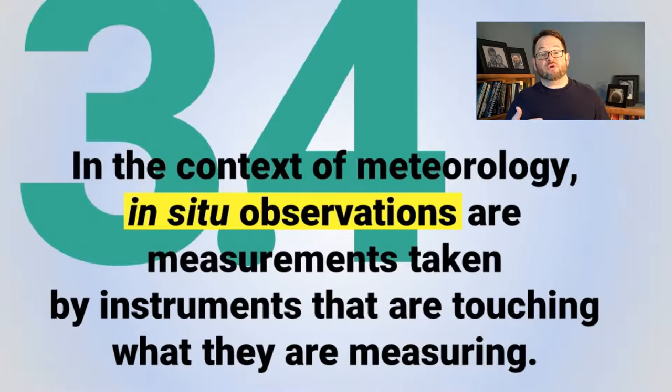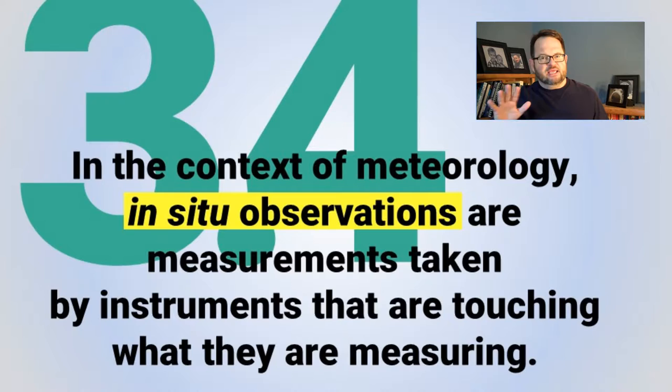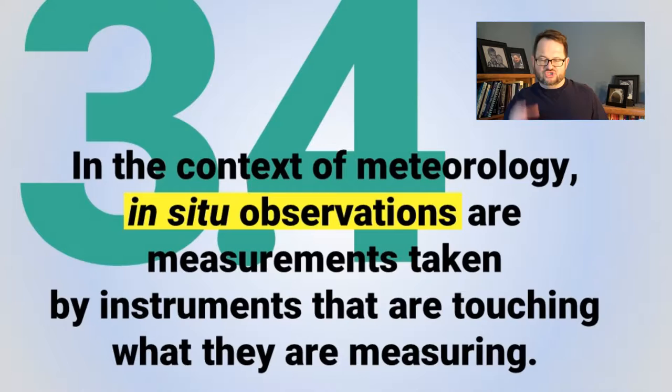That's in contrast to remote sensing, where you are taking measurements of something without actually being in physical contact with it. The classic example would be a telescope — it isn't touching Jupiter or something, it's measuring it from a distance. X-rays, satellite pictures, radar — another example of remote sensing. But the first four parts of this long lecture are going to be about in situ observations.